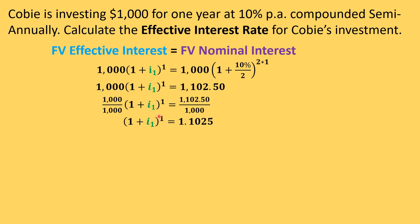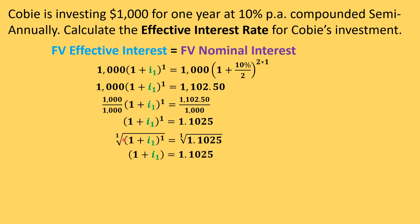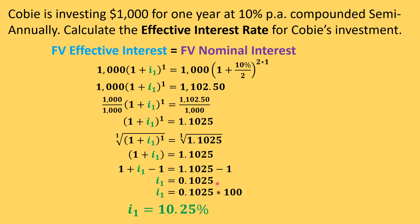Next, we take the root of one on both sides to deal with the exponent. On this side the root of one effectively removes the exponent, leaving us with one plus i₁. Subtracting one from each side, we're left with 0.1025. Multiplying by 100 gives us a 10.25% effective interest rate — that's the effective annual interest rate.